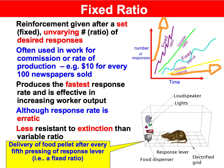A fixed ratio schedule provides the fastest response rate of the four partial schedules. It also produces an erratic response rate.